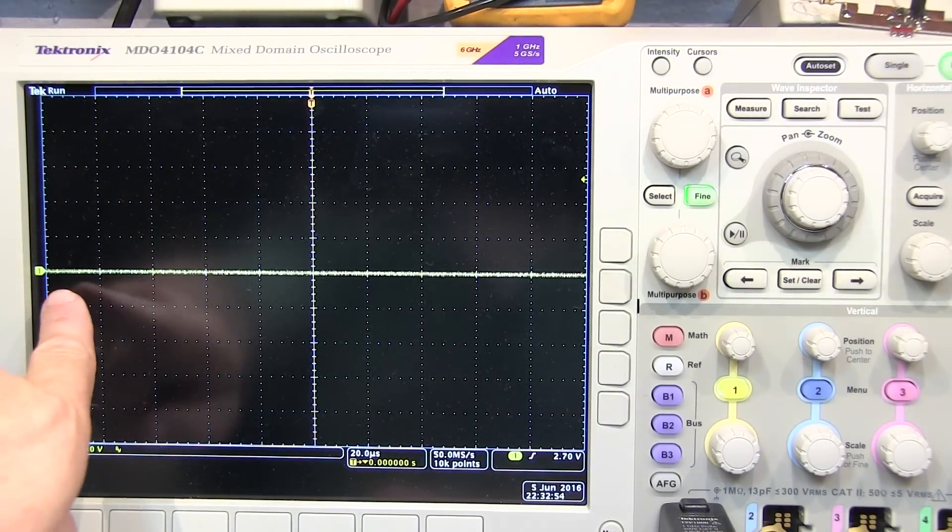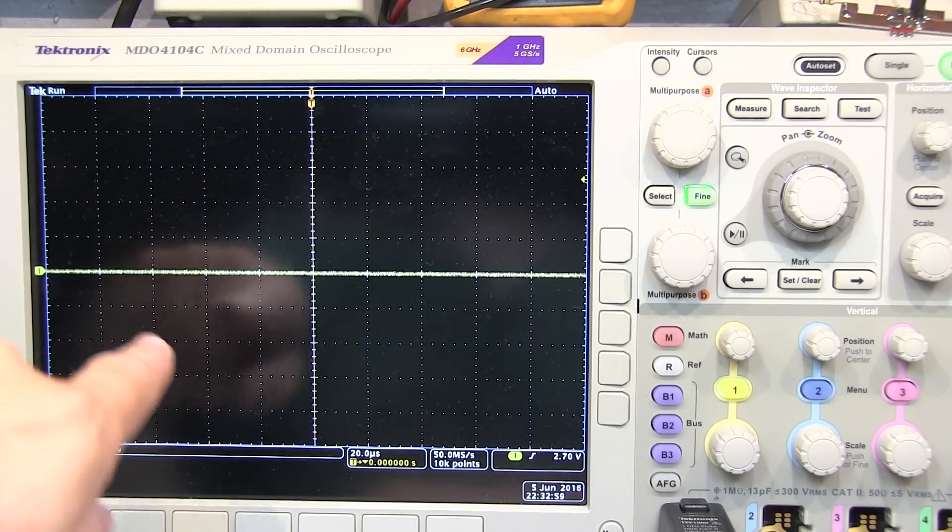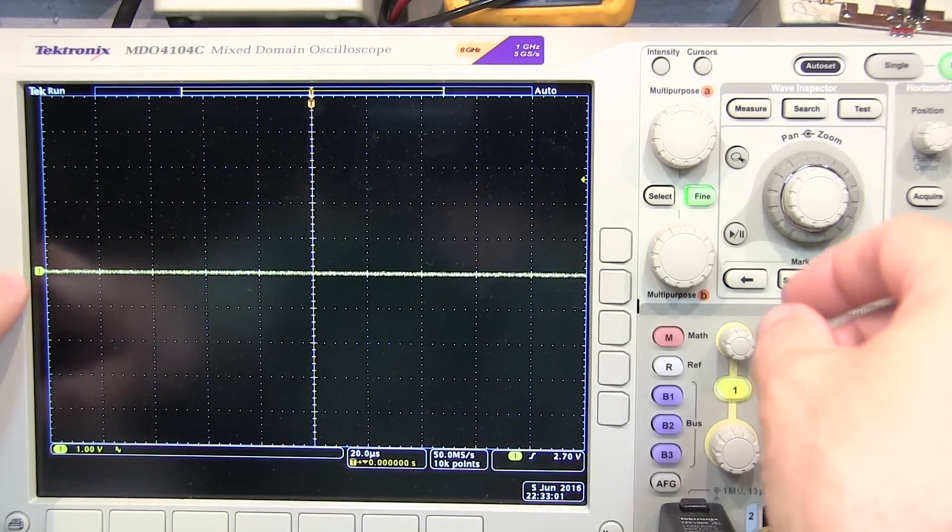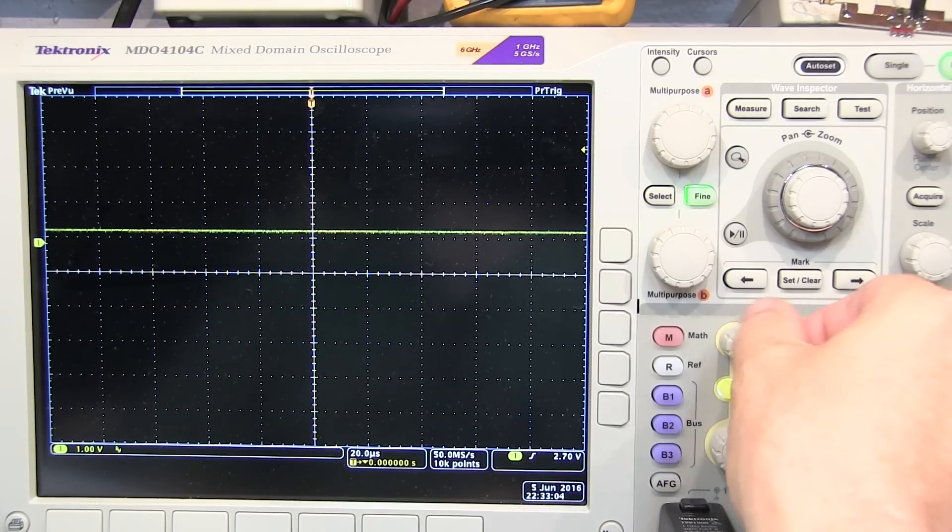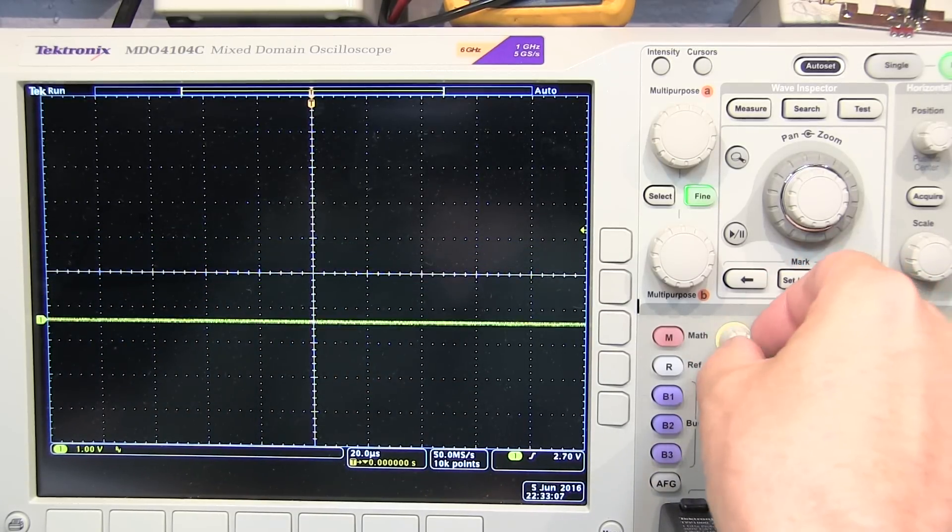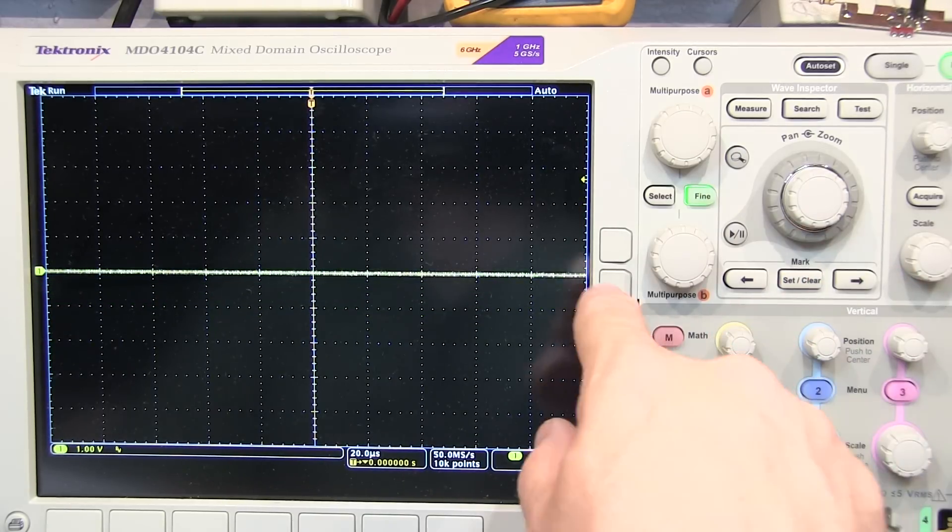let's take a look at what we've got in the scope screen. We see this small indicator right here on the left side of the display. That's our reference indicator, in this case for channel 1. If I adjust the position on the channel up or down, I can move that reference level wherever I'd like it to appear on the screen.